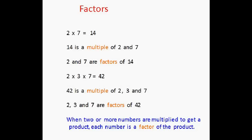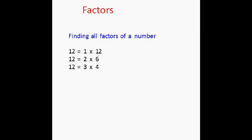So what we learn here is that when there are 2 or more numbers that can be multiplied to get a product, then each number is called as a factor of the product.